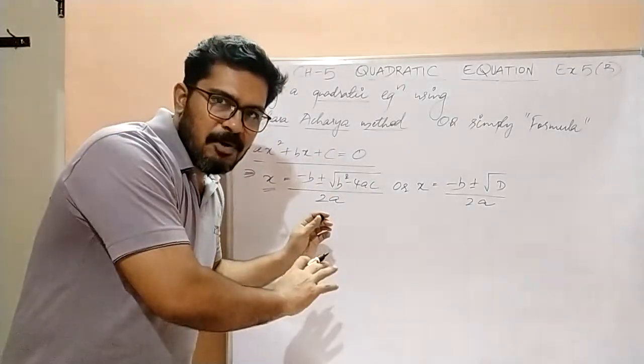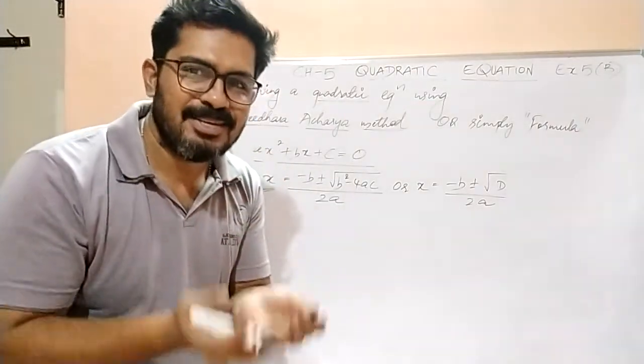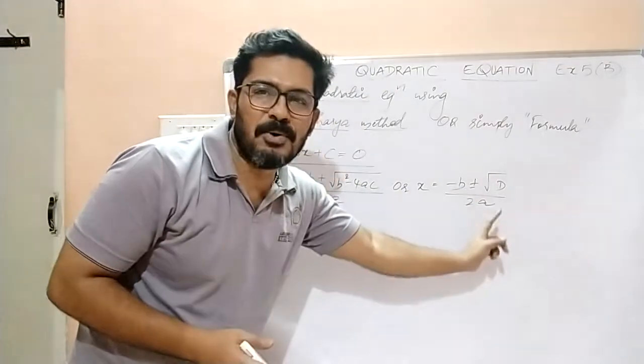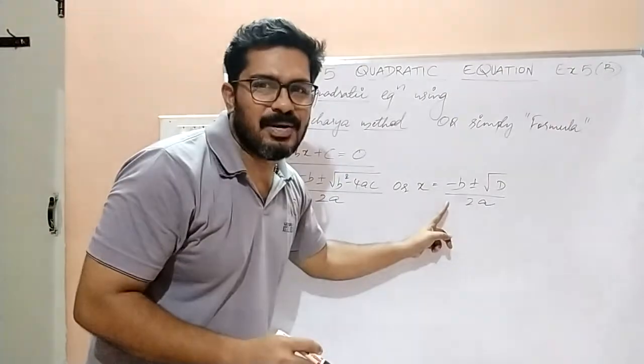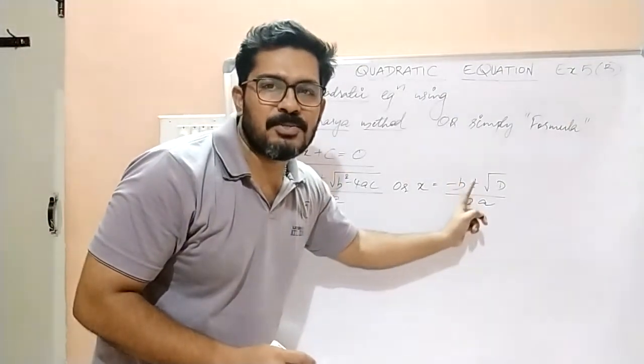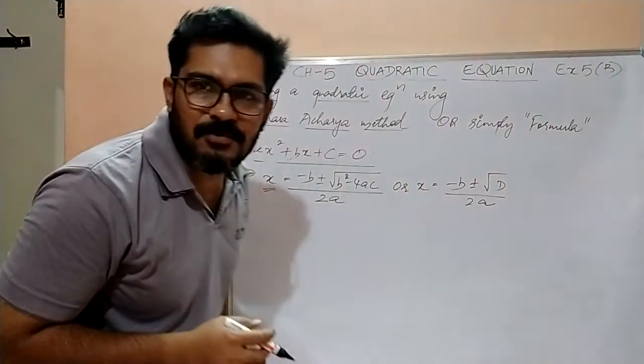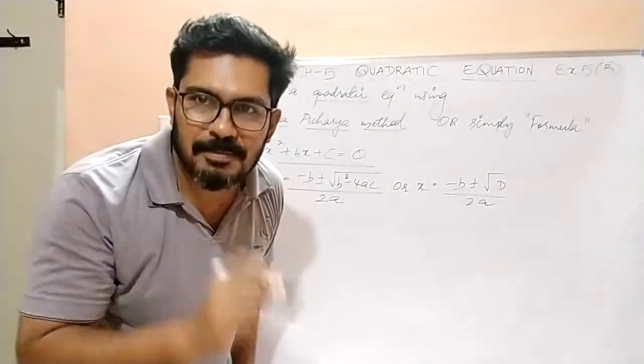Children, this formula appears to be a bit lengthy or big, isn't it? So children, just to shorten the formula I have written one more format of the same formula. X is equal to minus b plus or minus... We have already learned what is b² - 4ac in exercise 5b. What was it? The discriminant.